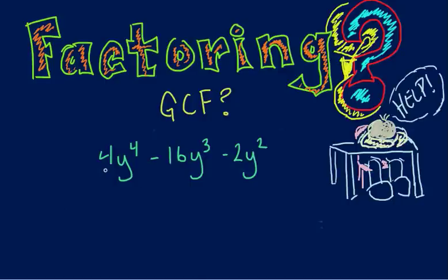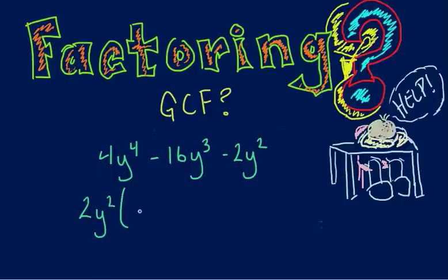First things first, let's start with our numbers. What is the biggest number that goes into all three of these numbers — 4, 16, and 2? It's not about which number is greatest; it's the biggest number that goes into all three. That would actually be 2, so we take out 2. What about our variables? Remember, we have to think opposite — we don't look at the greatest but the smallest. The smallest would be y squared.